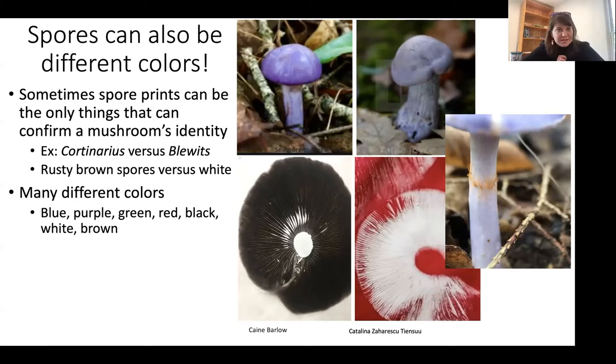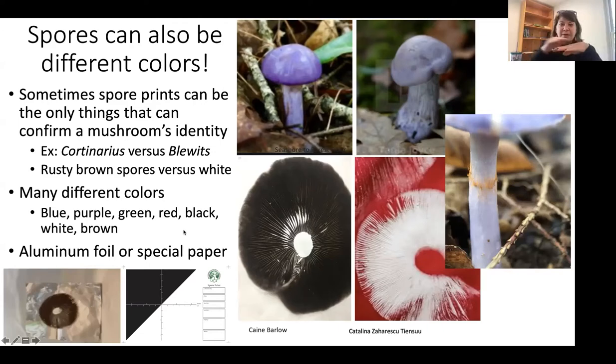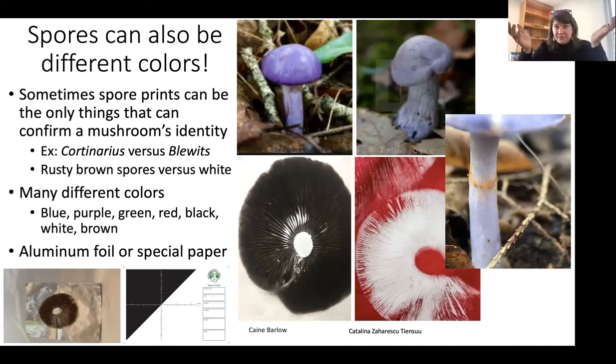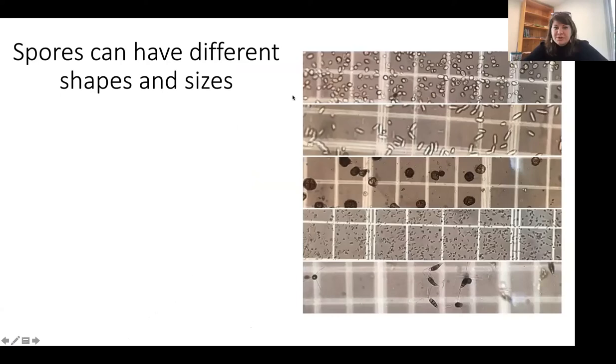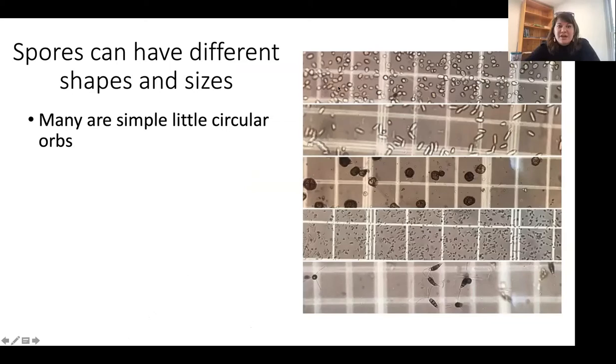You can make spore prints with any mushroom - put the mushroom cap face down with the gills or pores on a piece of paper or aluminum foil. Leave it overnight or for a couple of hours, and you can see the spores in these beautiful decorative rings from dropping off the gills. There are many different colors of spores: red, black, brown, green, purple - it is really amazing. If you're a super nerdy scientist, you can look at spores under a microscope all day and tell the difference between species.